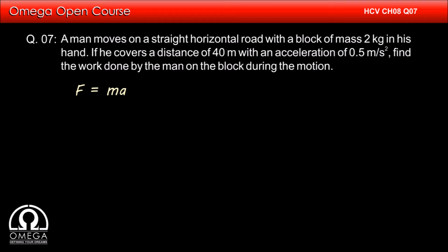Now the horizontal force applied by the man on the block must be equal to its mass into acceleration, that is F = ma = 2 × 0.5 = 1 Newton.